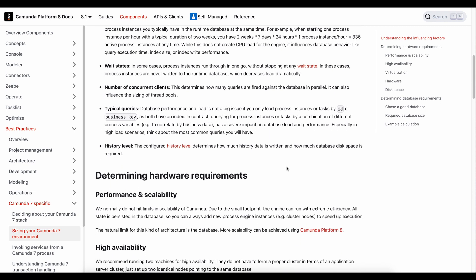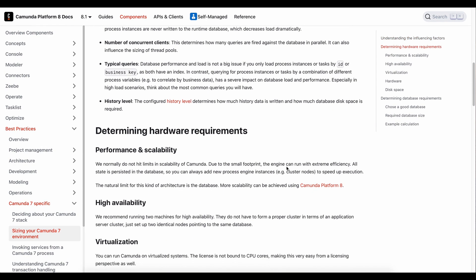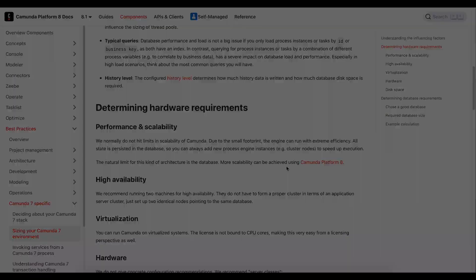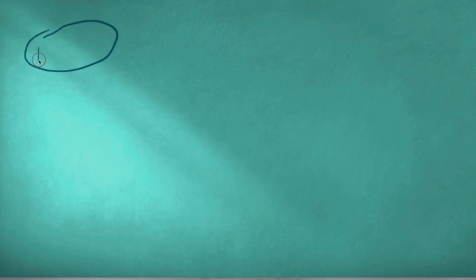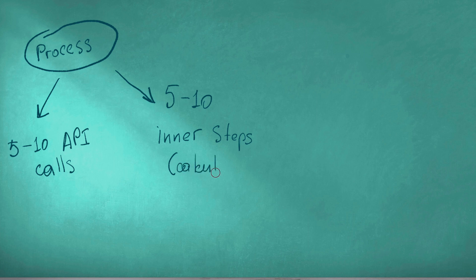Basically, this stack is not too demanding in terms of hardware. A process that contains 5 to 10 synchronized API calls and 5 to 10 internal calculations may process approximately 5 executions per second using 2 CPUs and 4 GB of RAM.